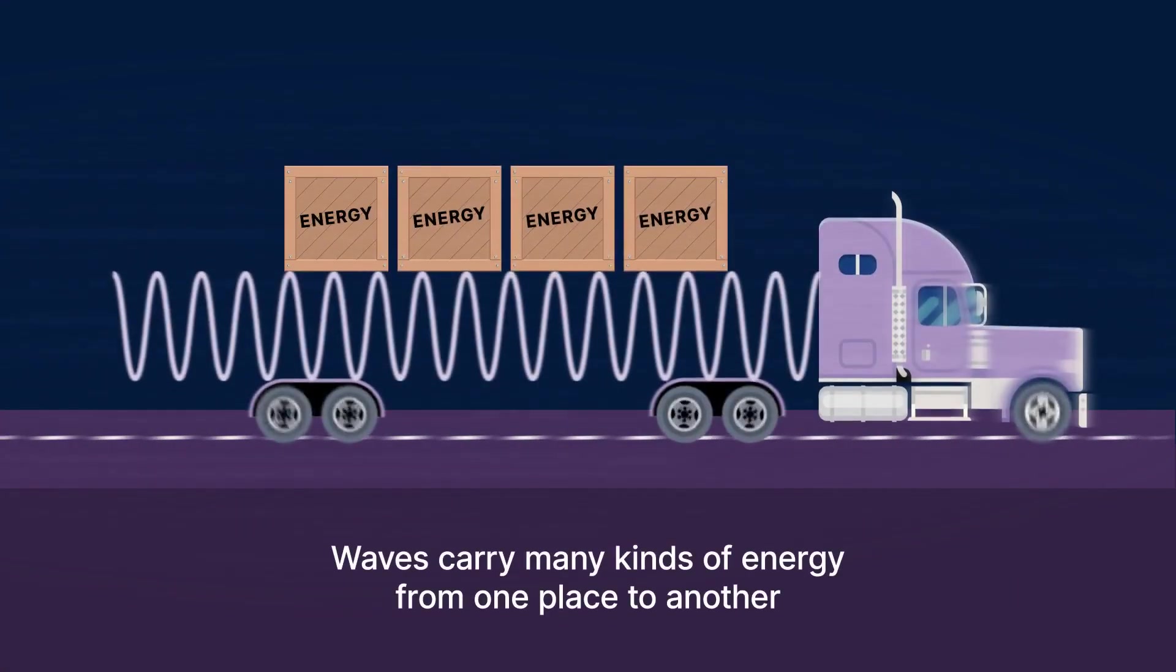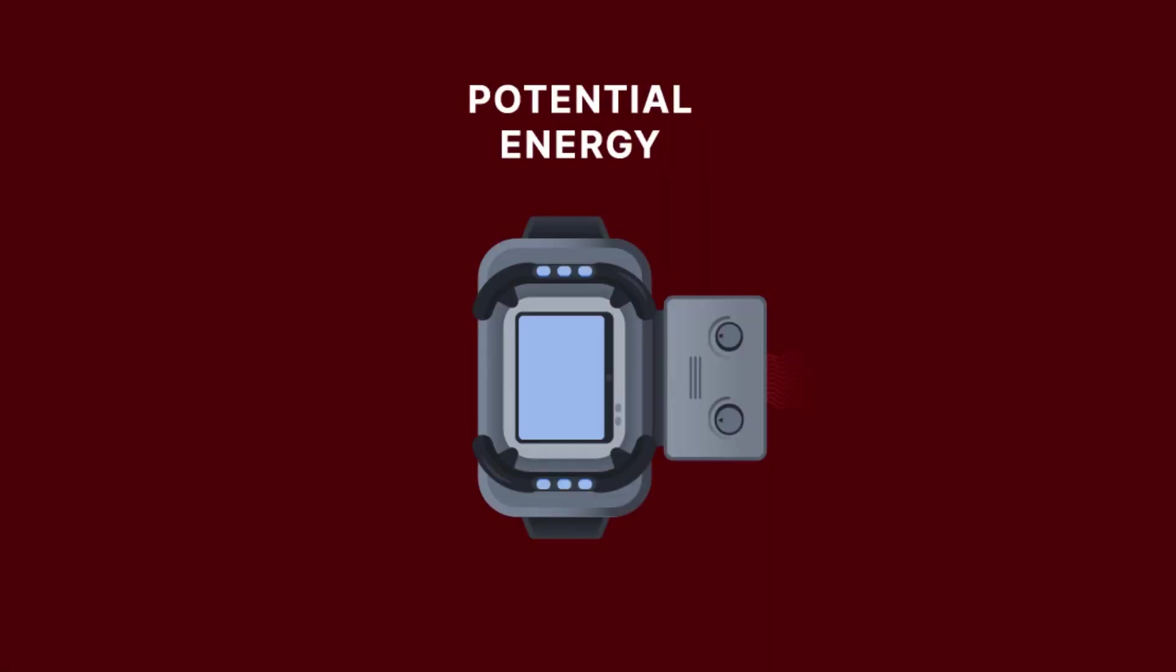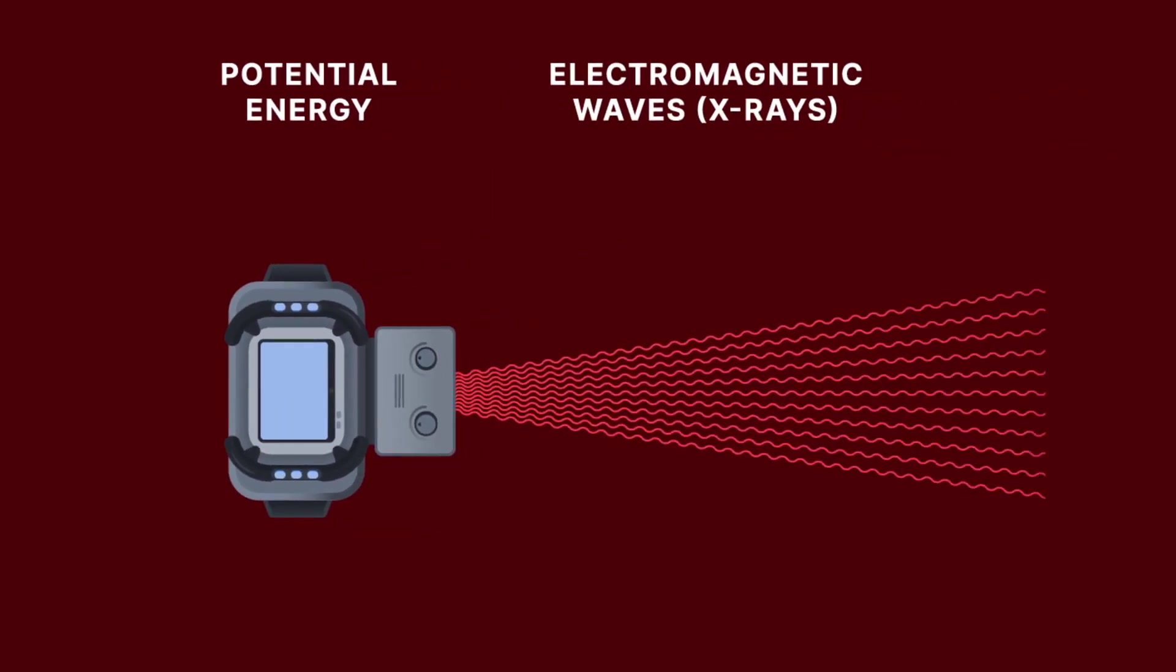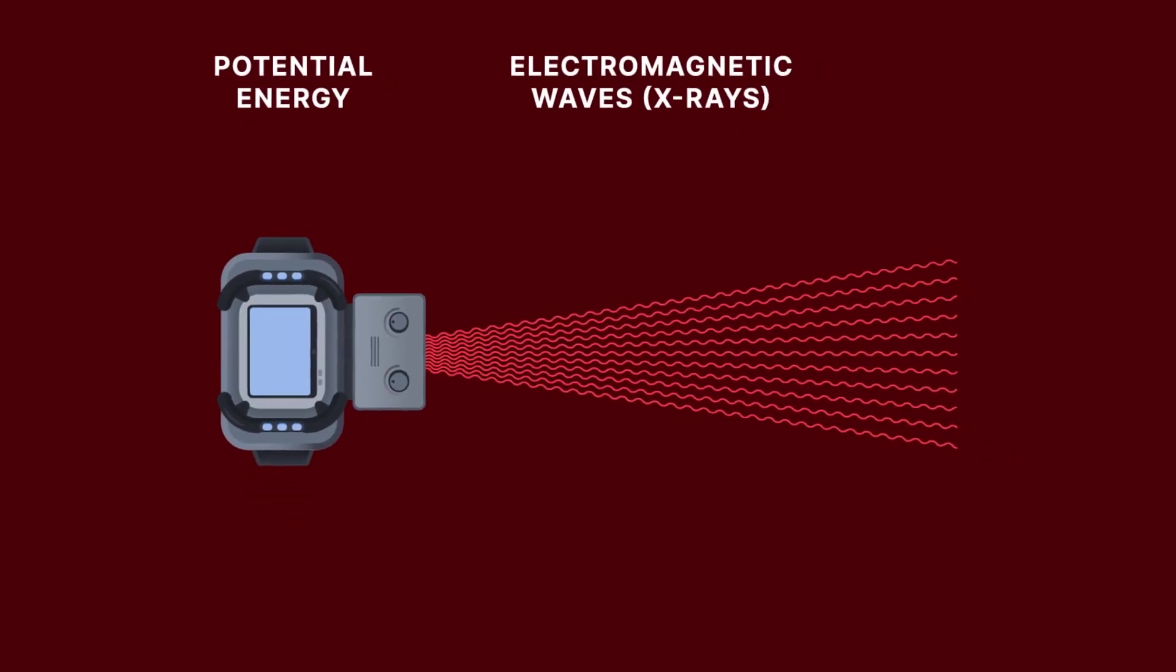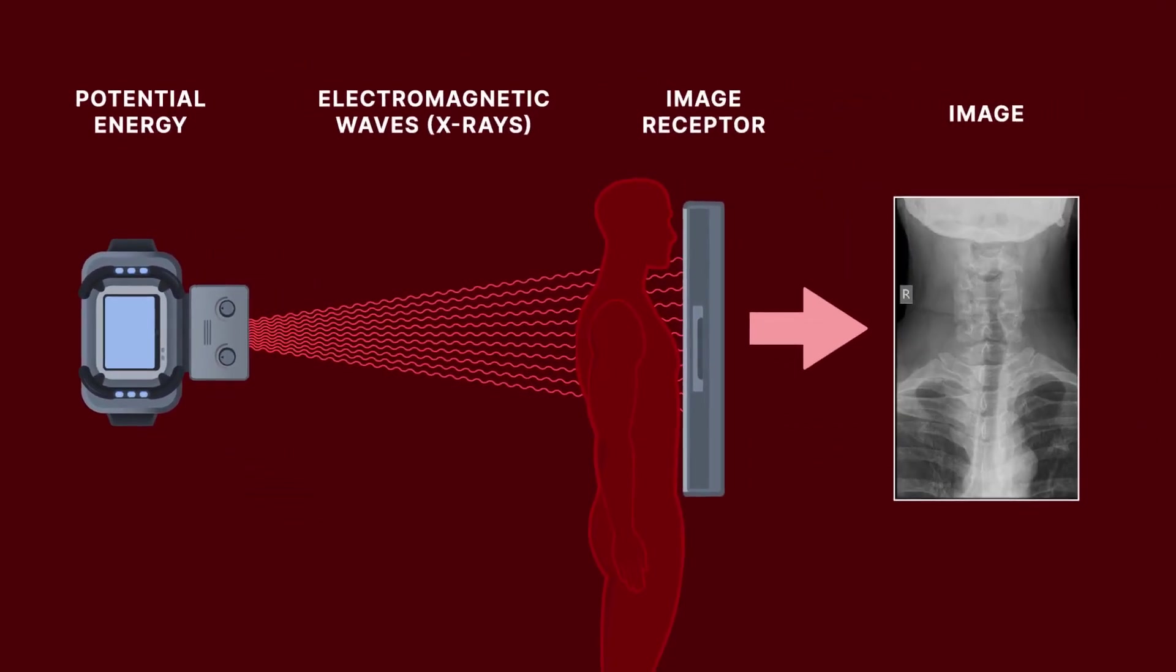Let's begin with a quick look at waves. You can think of waves as vehicles that carry many kinds of energy from one place to another. For instance, in radiography, the potential energy in an electric current is transferred to create electromagnetic waves, called x-rays, which travel from the x-ray tube to an image receptor to create an image.